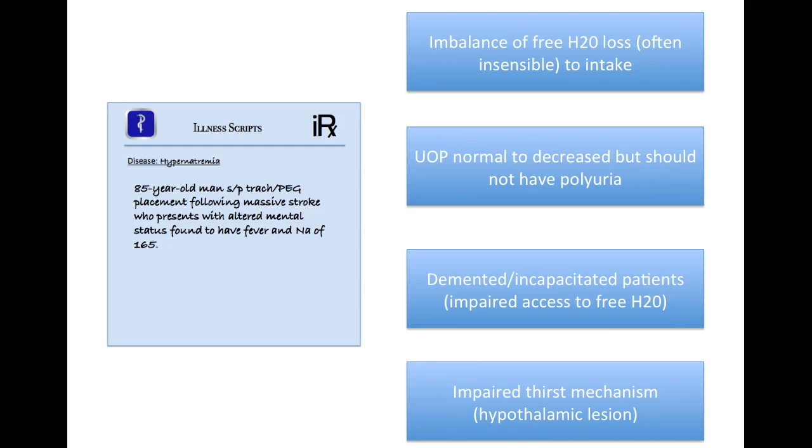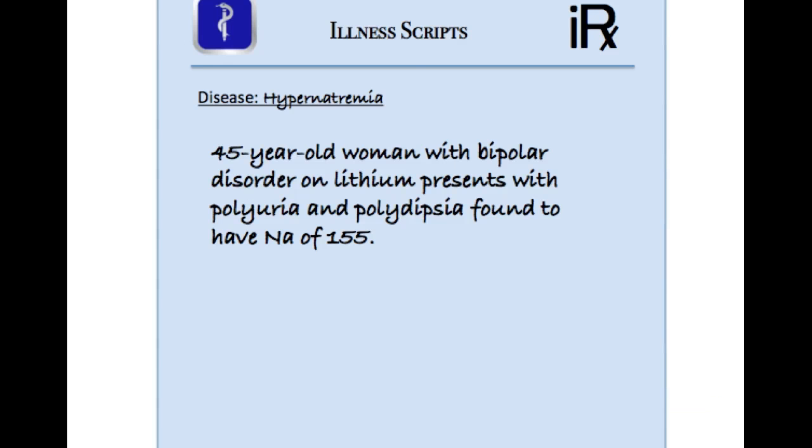If you have a patient that is alert and is hypernatremic but is not thirsty, by definition they have to have a hypothalamic lesion because the thirst mechanism is so very sensitive to any sort of increase in your serum osmolality such that if it starts to rise at all, we become very thirsty, and if you do not have that response, by definition there's a hypothalamic lesion.